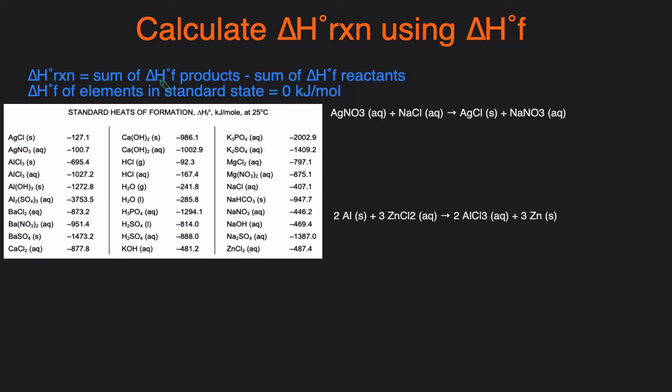Now the heat of formation values of the products will have to be given to you - you're not expected to memorize them. So usually you'll see a table which gives you the delta H formation of the reactants and products. And by the way, this little circle right here just means this is standard state. And another important concept to remember is that the heat of formation of any element in the standard state will be zero kilojoules per mole.